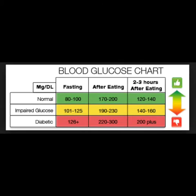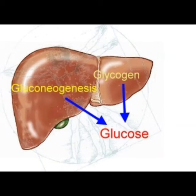Some individuals skip breakfast and have lunch around 11–12, leaving a gap of approximately 8 hours without eating. The blood glucose level goes down below normal. If no glucose is consumed, glycogen stored in the liver is broken down and converted to glucose. In the absence of glucose for energy production, fats and amino acids are utilized for energy.